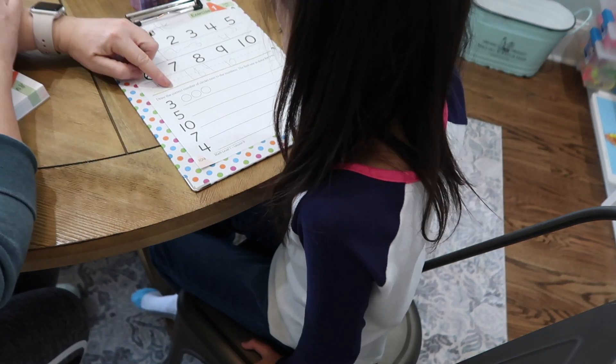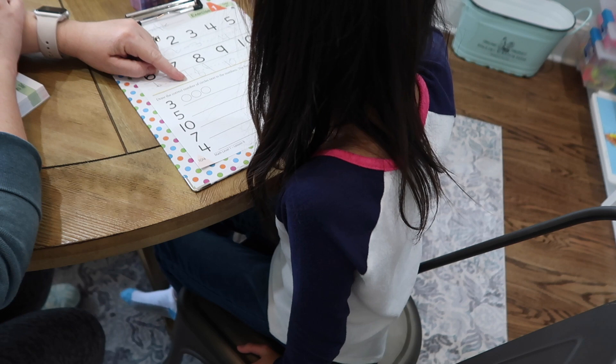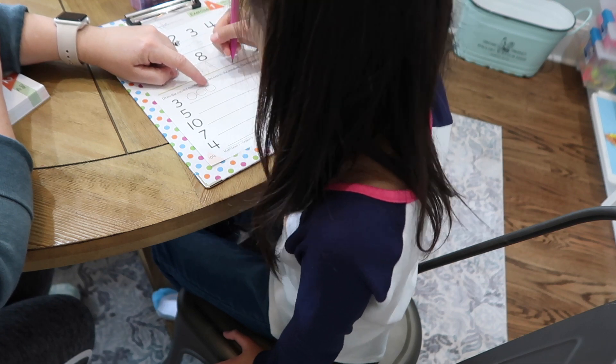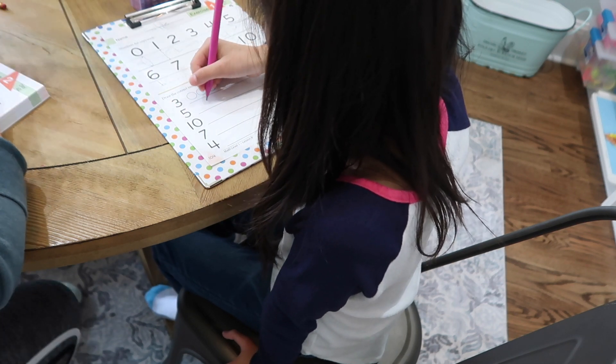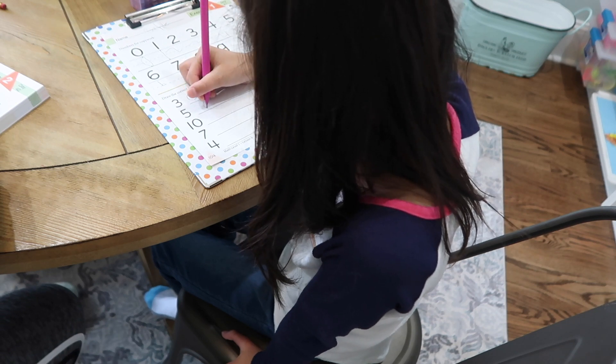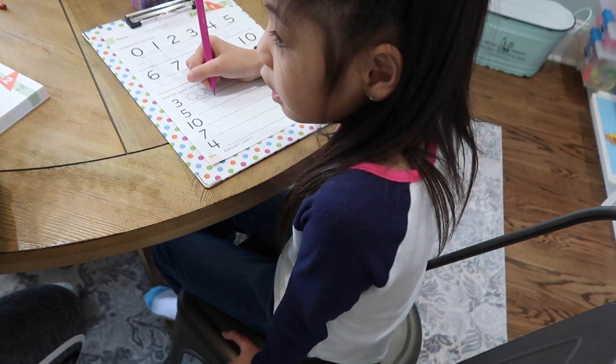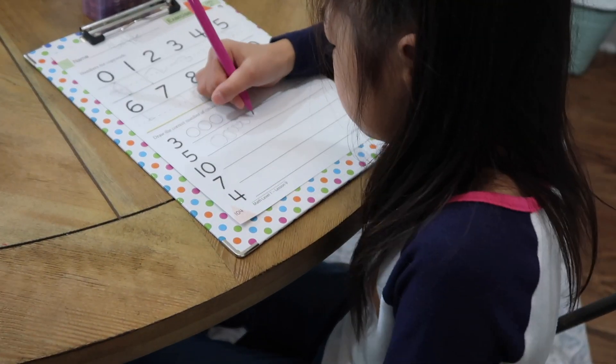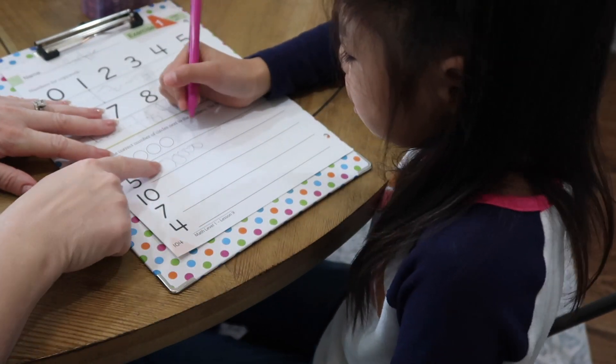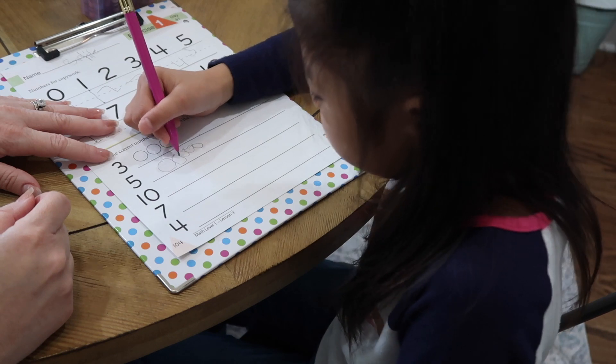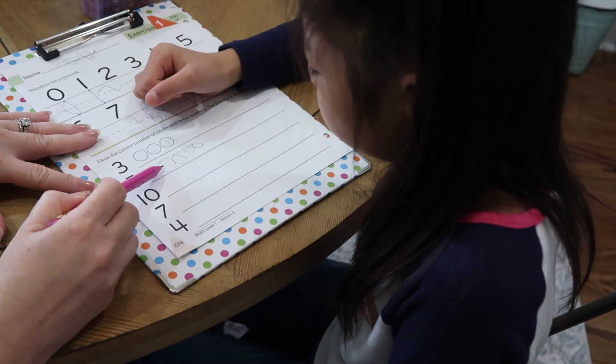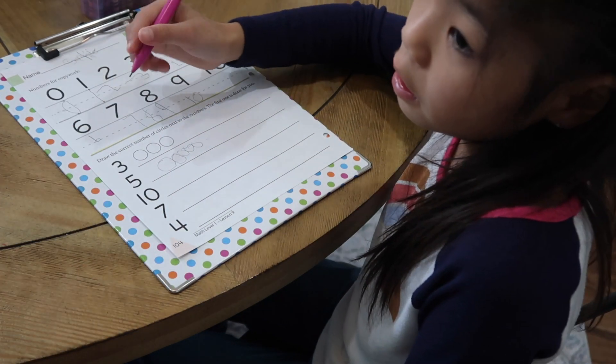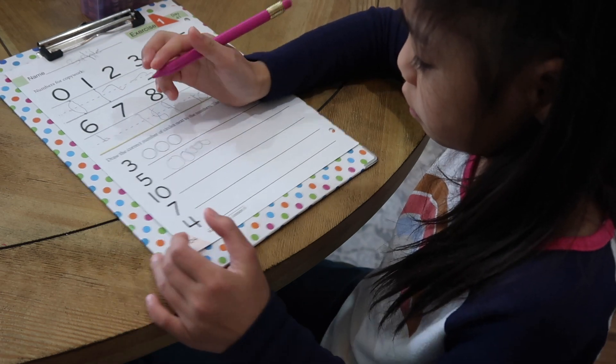Now let's read what it says to do right here. Draw the correct number of circles next to the numbers. The first one has been done for you. So this number is? Three. So they drew one, two, three. This number is? Five. So we need to draw five. Okay, can you count them? How many did you get? I can make five. Can you count and see what you have? Five. Start right here, put your pencil on it. One, two, three, four, five. So did you get the right number? Yeah, you did.